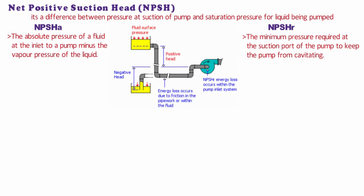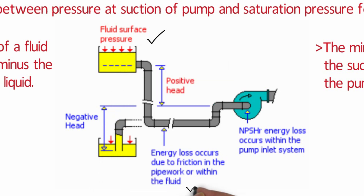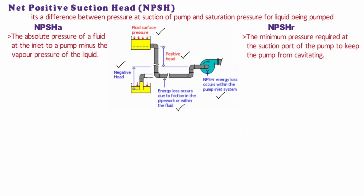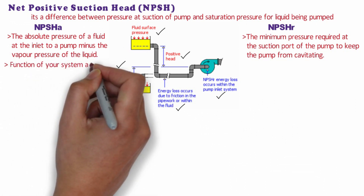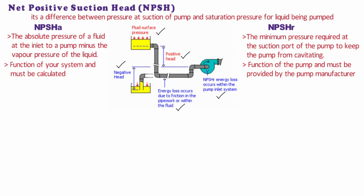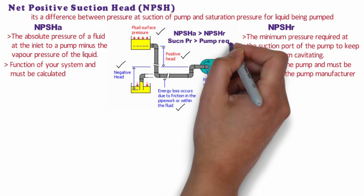For NPSHa, the fluid pressure at the pump inlet is determined by the pressure on the fluid surface, the frictional losses in the suction pipework, and any rises or falls within the suction pipework system. NPSHr represents the energy losses that occur within the pump as the fluid volume expands within the pump body; this is expressed as head of fluid. NPSHa is a function of your system and must be calculated, while NPSHr is a function of the pump and must be provided by the pump manufacturer. NPSHa must be greater than NPSHr for the pump system to operate without cavitation.